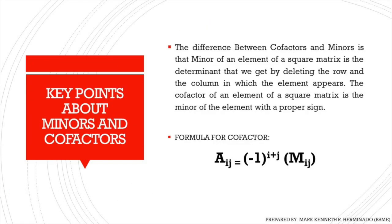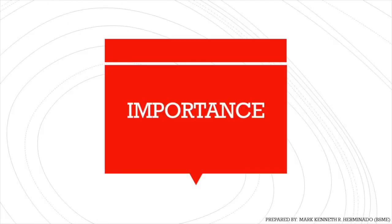For the key points about this topic: the minor of an element of a square matrix is the determinant that we get by deleting the row and column in which the element appears. The cofactor of an element of a square matrix is the minor of the element with a proper sign. Please take note of this formula for cofactor: aij is equal to negative 1 raised to i plus j times the minor, whereas i is the row number and j is the column number. Minors and cofactors are two of the most important concepts in matrices as they are crucial in finding the adjoint and the inverse of a matrix.